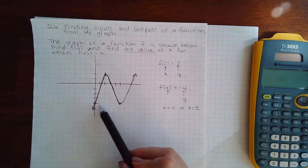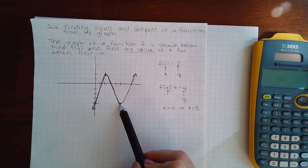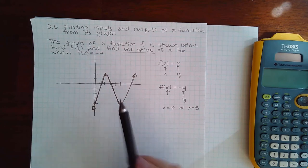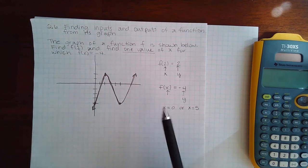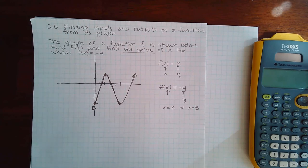Now if for some reason on your graph it doesn't land exactly in a corner, like on a unit, don't try to guess the fraction. Use the other point that does land on a corner in the graph paper. So you want to be very precise. Don't try to guess what the answer is. Pick the one that you can obviously tell what the x coordinate or y coordinate is.